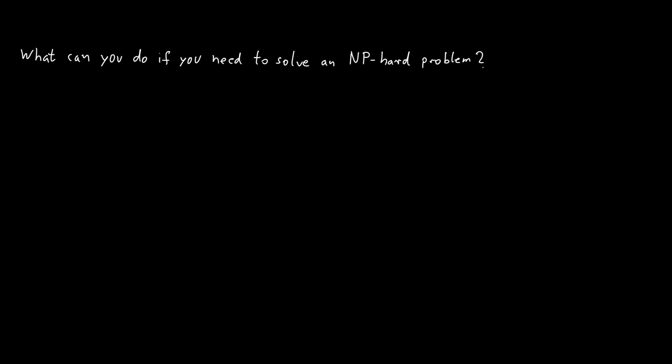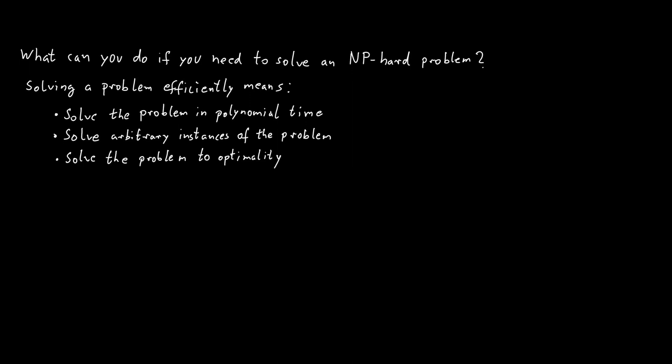So far, when we're saying we want to solve something efficiently, what we really mean is the following three things. We want to solve the problem in polynomial time, which means efficiently. We want to solve arbitrary instances of the problem, meaning whatever input you get, we want to find a solution. And third, we want to solve the problem to optimality. We always want to find the best possible solution for the optimization problem.